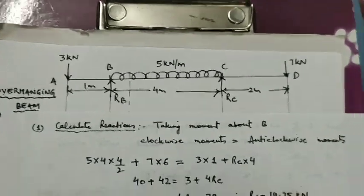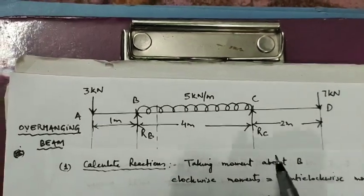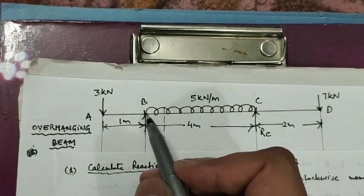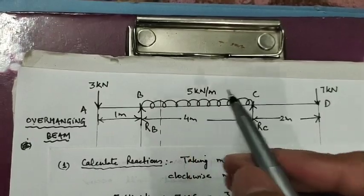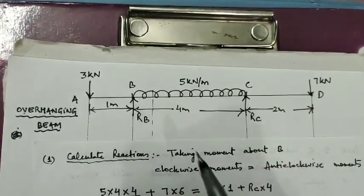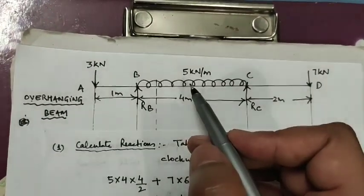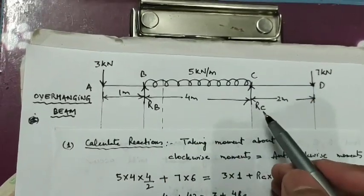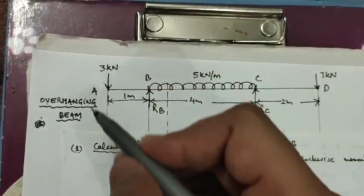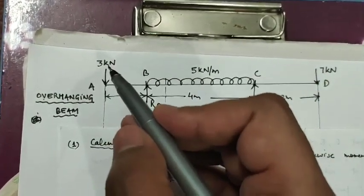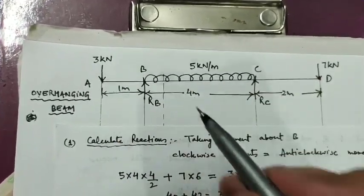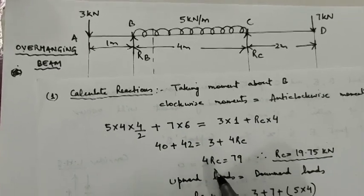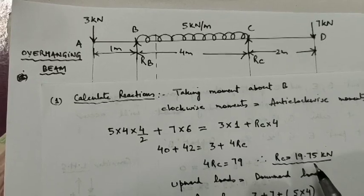In order to find the reactions we will use two equations of equilibrium. First we will take moments about point B and equate all clockwise moments to anticlockwise moments. The clockwise moment of 7 kN at point D is 7 into 6. The UDL moment is 5 into 4 acting at the center, that is 4 by 2 — also clockwise about point B. The moment of RC is RC into 4, anticlockwise, and the moment of 3 kN is 3 into 1, also anticlockwise. By solving this equation we get RC equal to 19.75 kN.